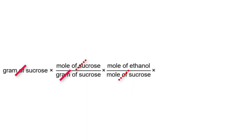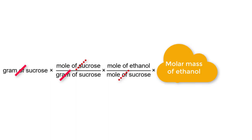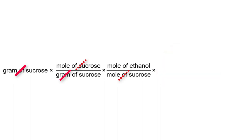We are not done yet. We still have to go from moles of ethanol to grams of ethanol. What do we have to use to do that? As I'm sure you have guessed, we are going to use molar mass again. But what is different? This time the unit grams is on top and moles are on the bottom. Moles of ethanol will cancel out and we will be left with grams of ethanol.